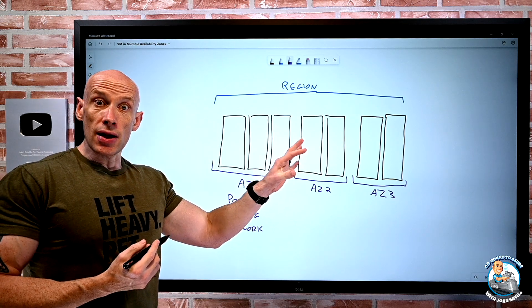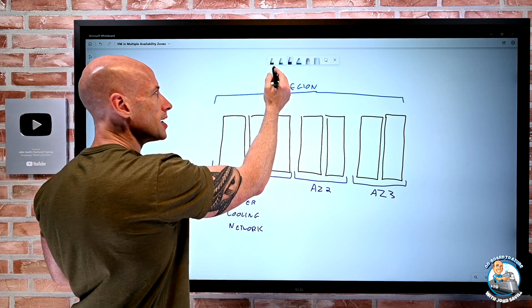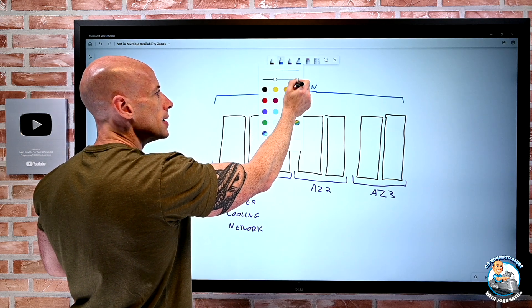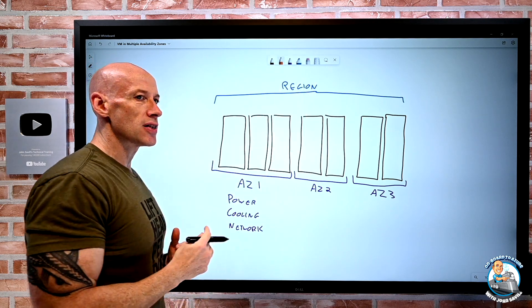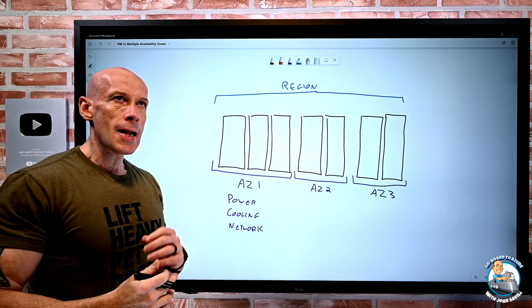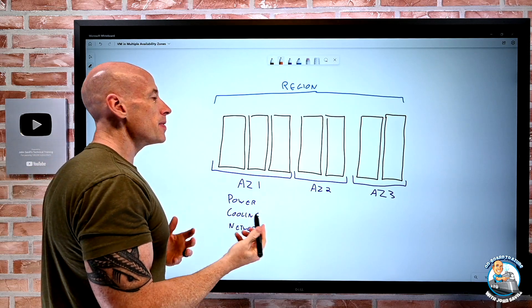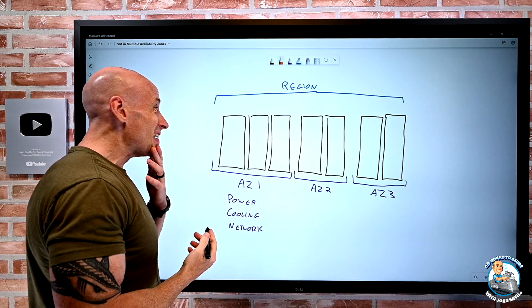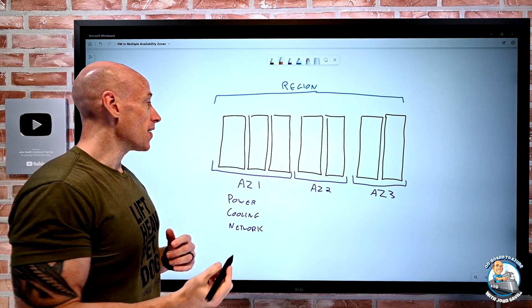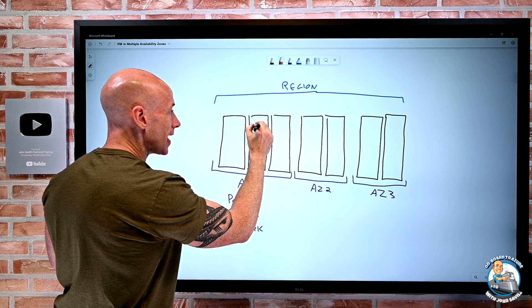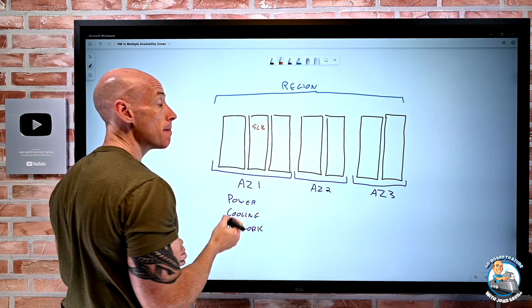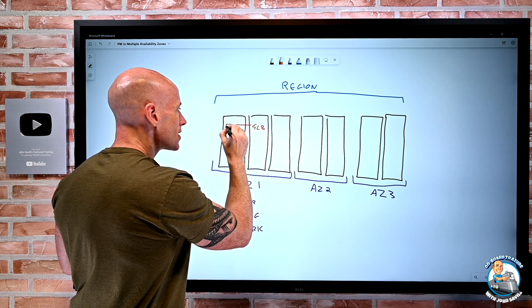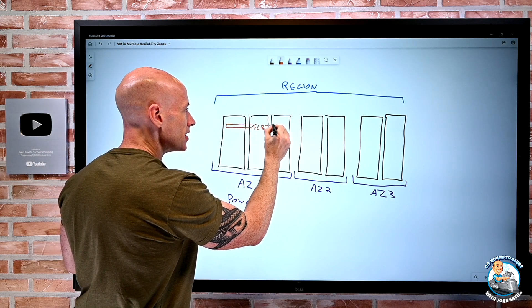And we leverage this. Now, I can think about when I deploy services, I can absolutely deploy my service as zone redundant. Now, zone redundant, there could be services like the standard load balancer. I can deploy that as zone redundant, and I don't really think anything of it. I say, hey, I want to create a standard load balancer and make it zone redundant. Well, that service just spans the availability zones.